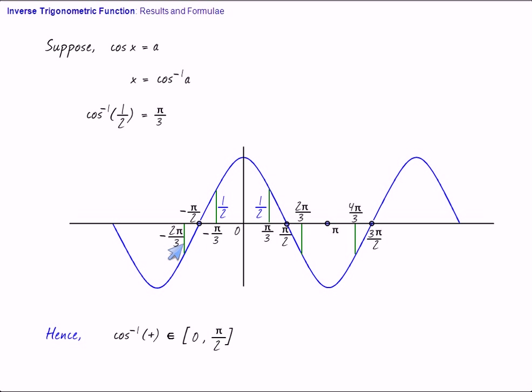And this equidistant scene will always be there because cos of minus x is cos x. Cos is an even function. So, we will prefer this 2 pi by 3 because it is a positive angle. And you can feel from graph that cos inverse of any negative quantity must lie between pi by 2 and pi.